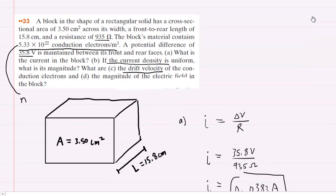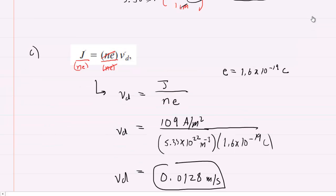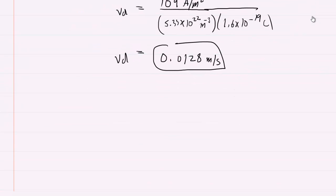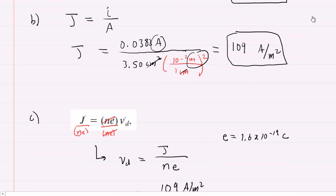Finally we move to part D. It wants the magnitude of the electric field in the block. We recall that the electric field equals the potential difference across the block divided by its length. We can go back to the given information.